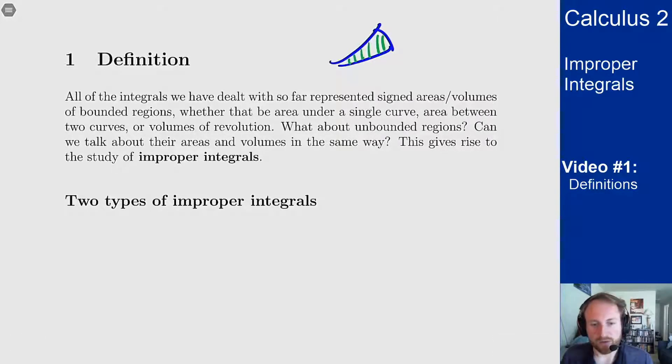But another question you may want to ask, and we'll see why this is important later on. What about unbounded regions? What about regions that I can't put inside a box? They stretch too far away, they stretch off to infinity in some way. Can I also talk about their areas and volumes? And the answer turns out to be yes, and that's how we get improper integrals.